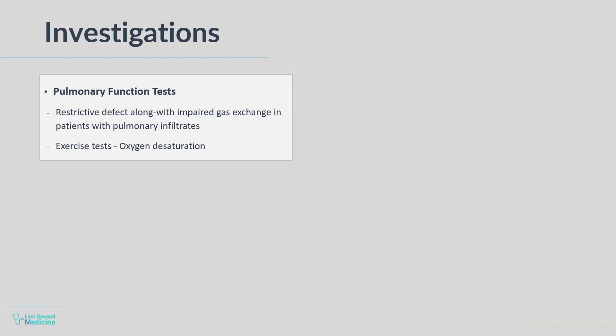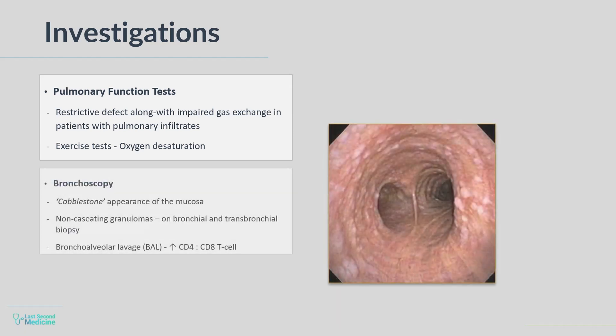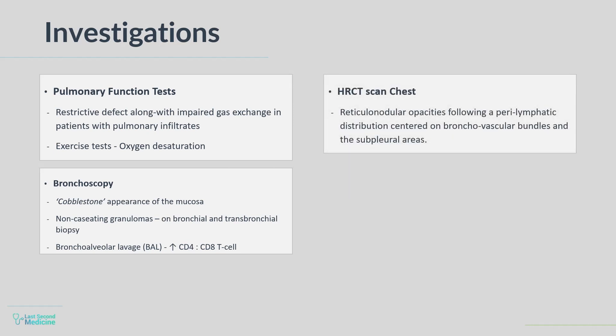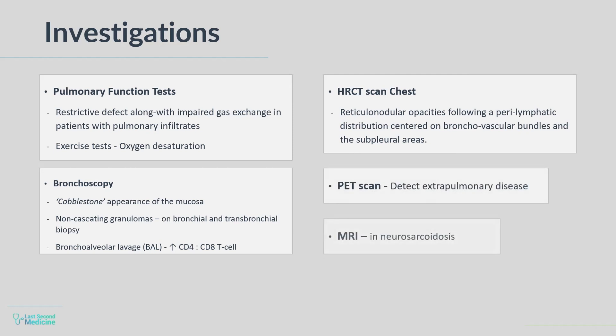Exercise tests may reveal oxygen desaturation. Bronchoscopy may demonstrate a cobblestone appearance of the mucosa. Bronchial and transbronchial biopsies usually show non-caseating granulomas. Bronchoalveolar lavage fluid typically contains an increased CD4 to CD8 T-cell ratio. Characteristic HRCT appearances include reticulonodular opacities that follow a perilymphatic distribution, centered on bronchovascular bundles and the subpleural areas. PET scanning can detect extrapulmonary disease, and MRI brain may be useful in diagnosing neurosarcoidosis.